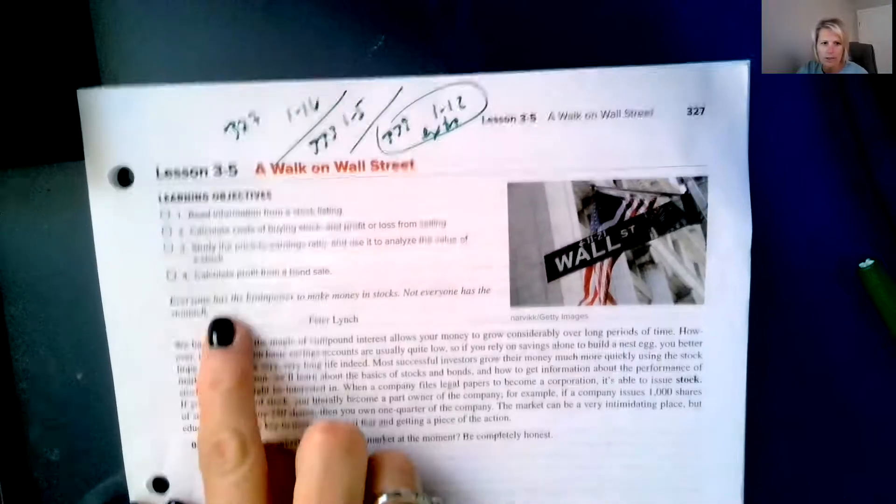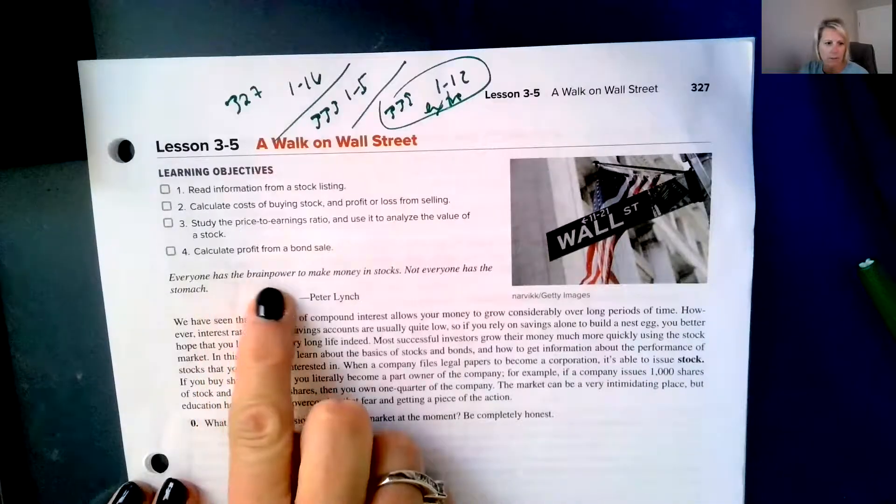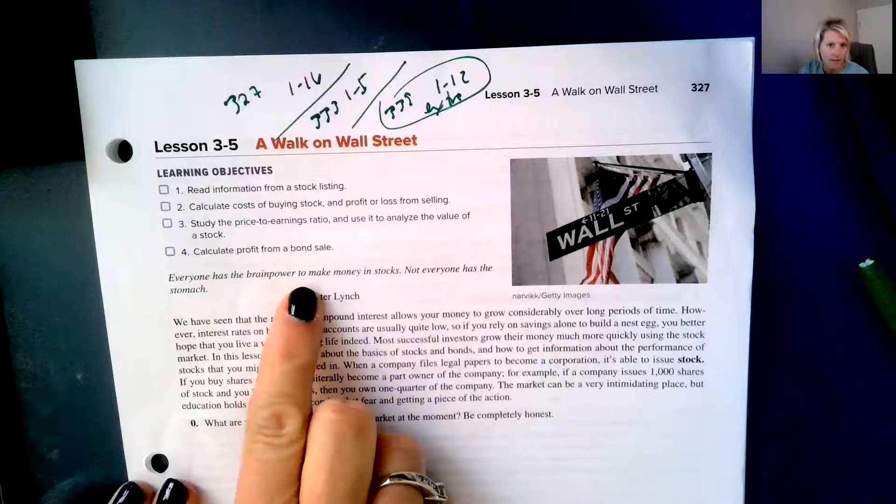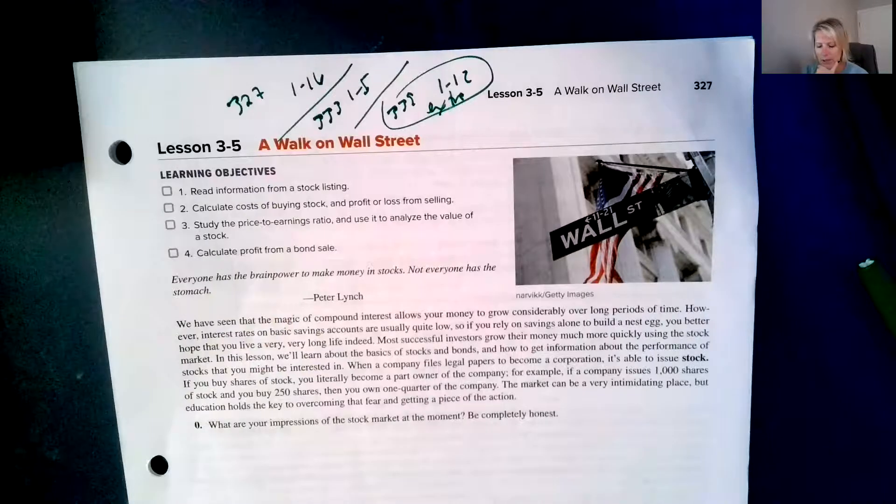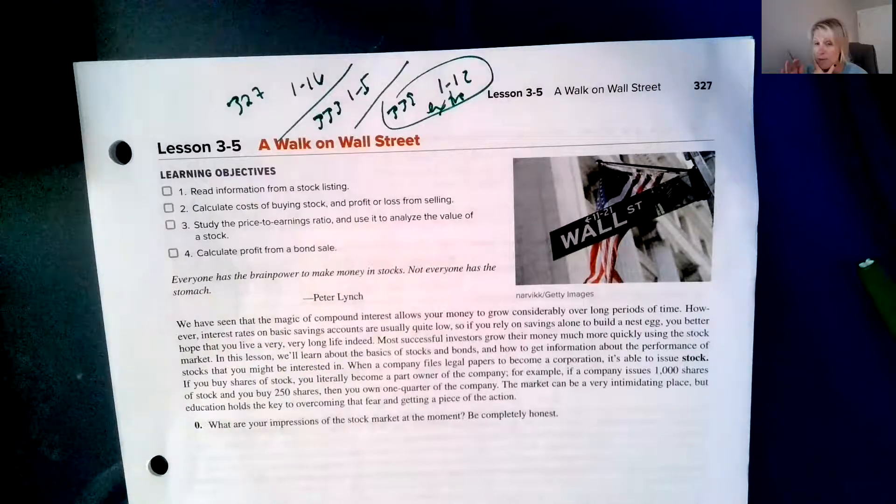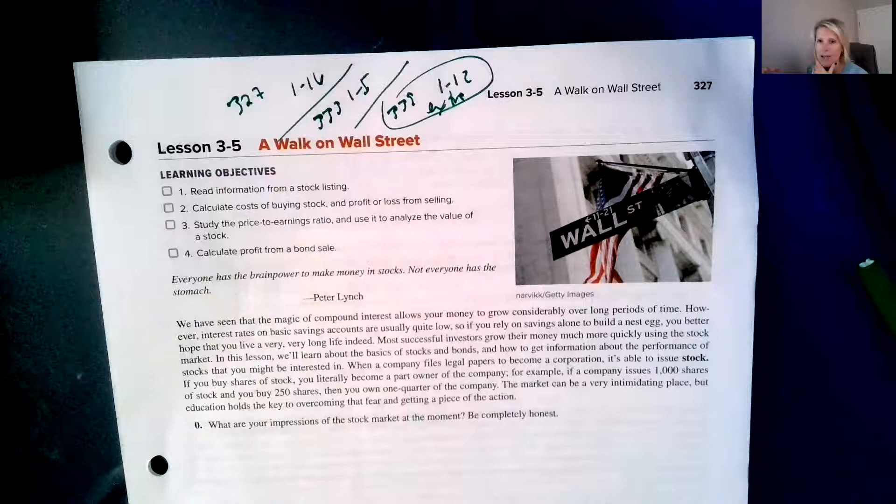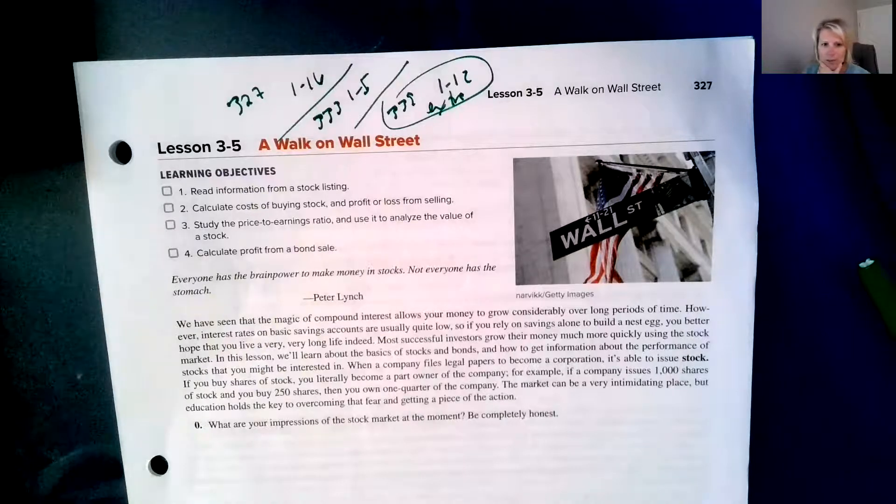So our quote for the unit says, everyone has the brainpower to make money in stocks. Not everyone has the stomach, because sometimes you make money and sometimes you don't. So we've already talked about stocks a little bit, because in Unit 2, I had you pick a company that you wanted to invest in, and you probably went and found the price and all that data that you needed to collect. But it was probably very overwhelming all of the things that were on that page. So we're going to learn about some of those pieces today.